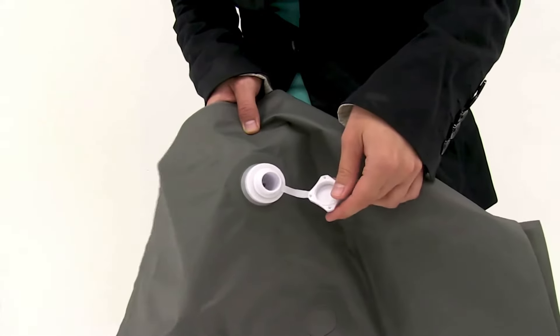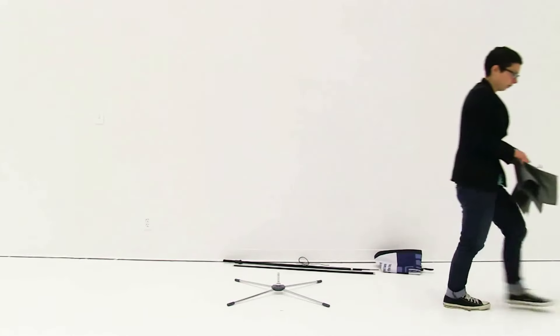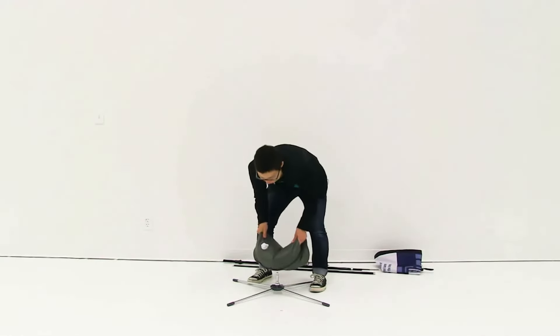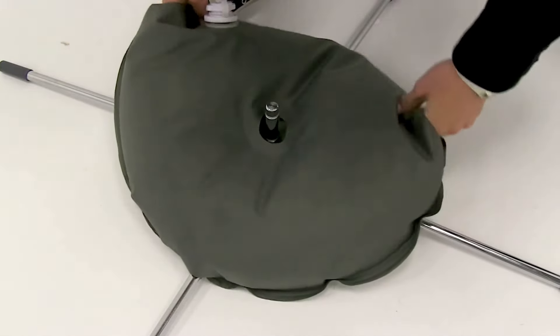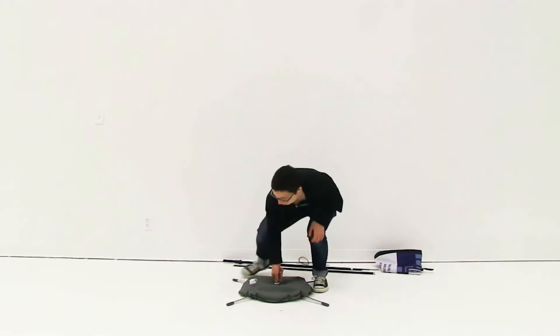Using the valve on the side, I'm going to fill up my ballast. Once I have the ballast full of water, I'm just going to set it down on the middle of my scissor base, and then I'm just going to put the scissor base off to the side.